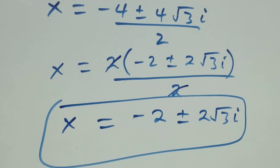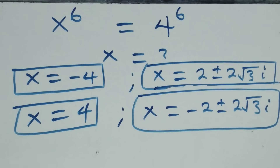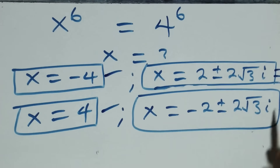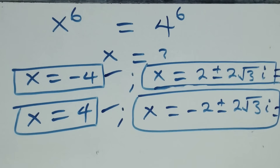Therefore, altogether we have six solutions to this problem: two real solutions (x equals negative four and x equals four) and four complex solutions (two from each quadratic). Thank you for watching — don't forget to subscribe for more videos, turn on notifications, share this video, give a thumbs up, and leave your comments. See you next class, bye for now.